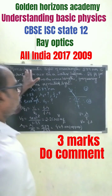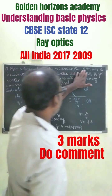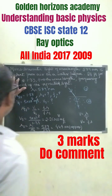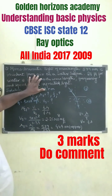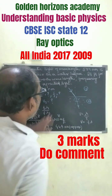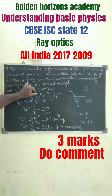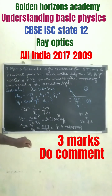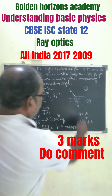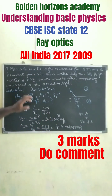Hello, this is a question from Class 12. Monochromatic light of wavelength 559 nanometers is incident from air on a water surface. If mu is the refractive index of water, that is 1.33, we have to find out the wavelength, frequency, and the speed of light in water.